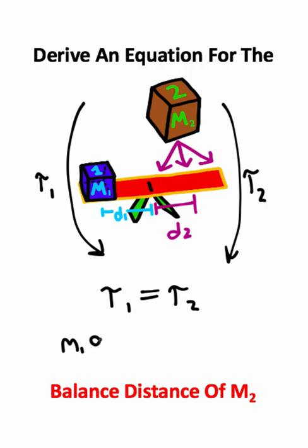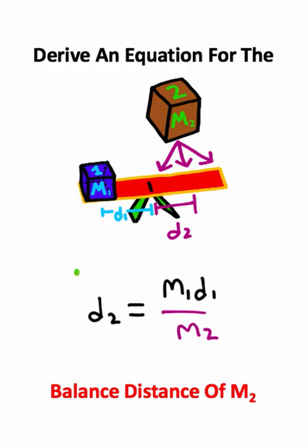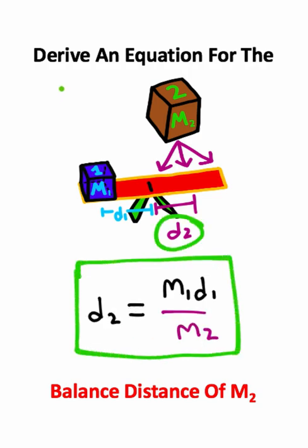So we're going to have M1GD1 equals M2GD2. Since gravitational acceleration is just a constant, it's going to cancel in this equation. Now if I want to solve for D2 in this problem, I'll just take M2 and divide it on both sides of this equation. So this is the equation that we need in order to balance the structure.